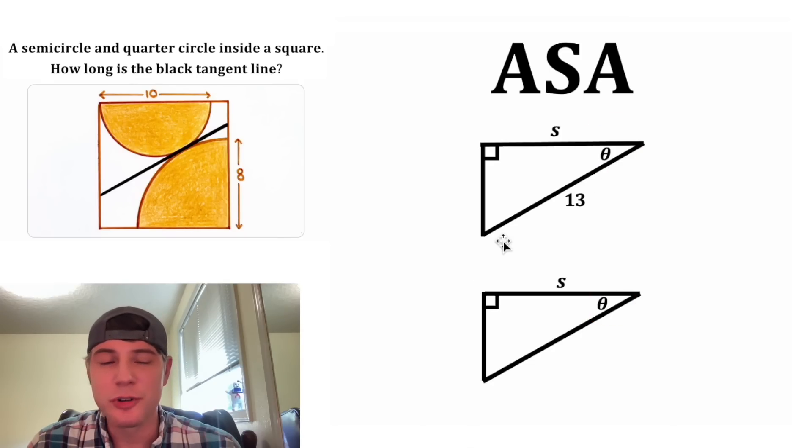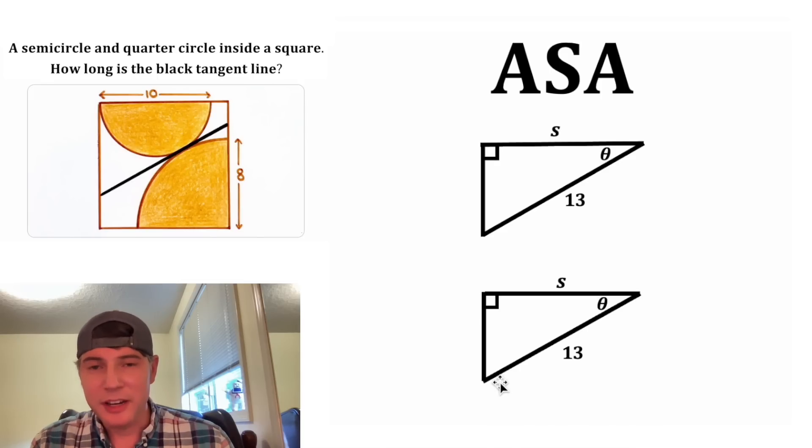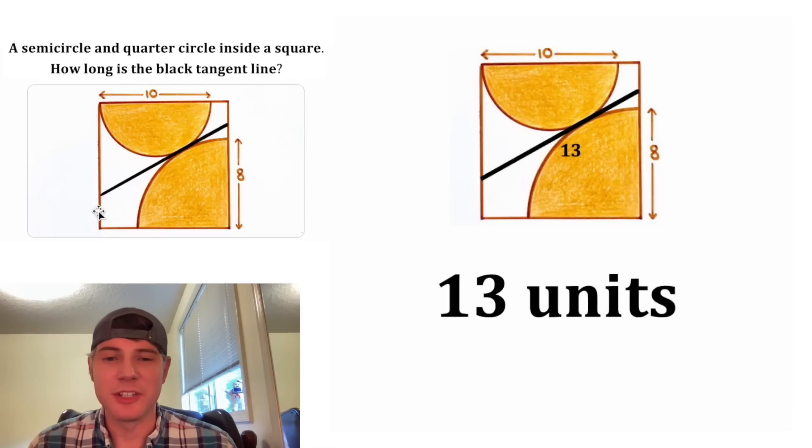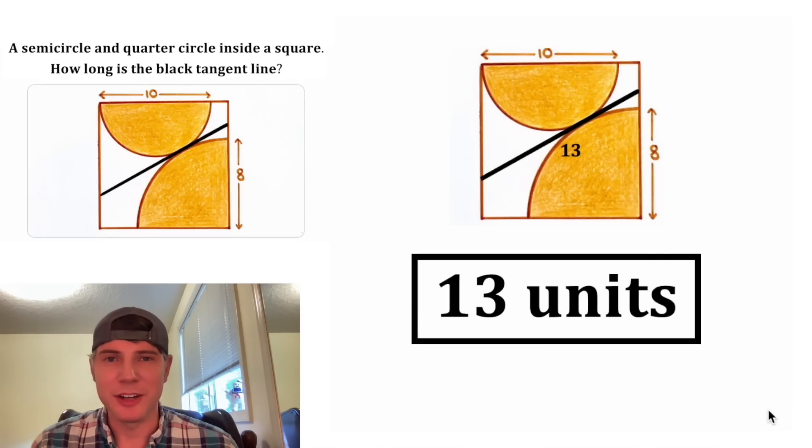And now since we know these two triangles are congruent, that means if this side is 13, this side is also 13. And this side length right here is the same thing as this side length right here. So we've now solved the problem. It's equal to 13 units. Let's put a box around it.